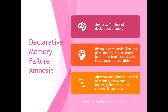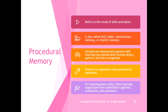Procedural memory refers to the recall of skills and habits — also called skill, habit, non-conscious, or implicit memory. It includes perceptual and cognitive skill learning; perceptual skills include object, pattern, and face recognition. Practice is required to store procedural memory, which is why in lab you don't just go through it once — you practice so you can store those things. Three learning stages have been identified for motor skills: cognitive, where you think you understand how it works; associative, where you connect the cognitive with the physical; and automatic, where you have it down.